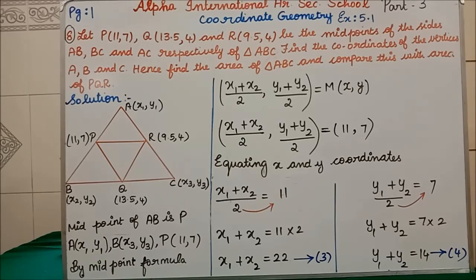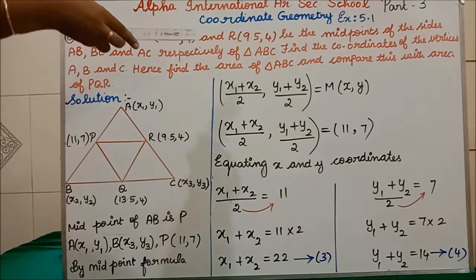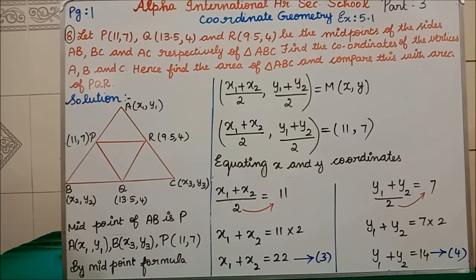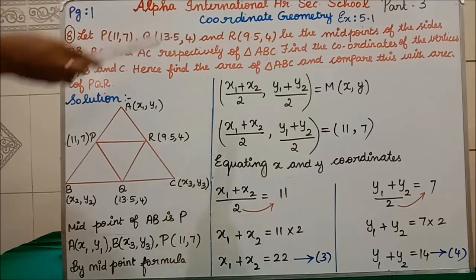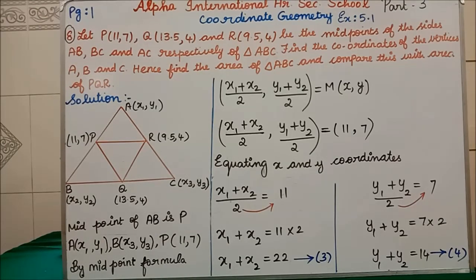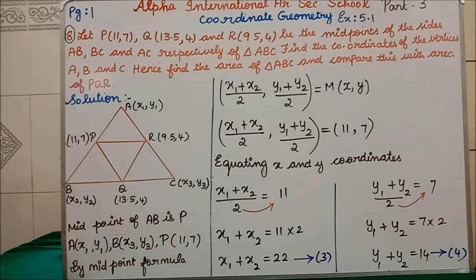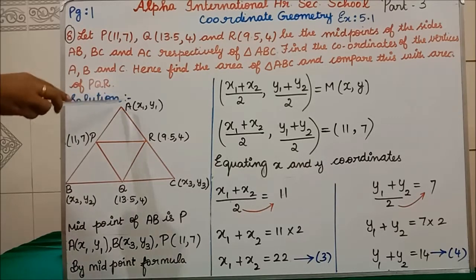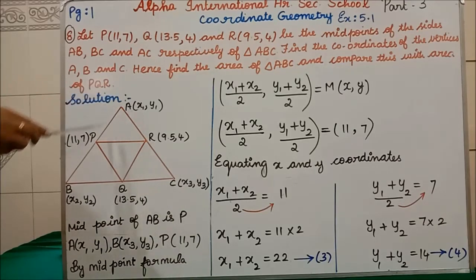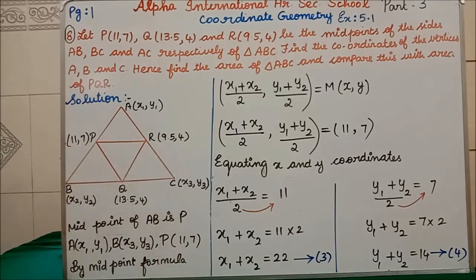See the 8th question. Let P(11,7), Q(13.5,4) and R(9.5,4) be the midpoints of the sides AB, BC and AC respectively of triangle ABC. In the side AB we are having the midpoint P. In the side BC we are having the midpoint Q. Similarly in the side AC we are having the midpoint R. Draw one triangle and keep midpoints on AB, BC and CA sides, marking vertices P, Q, R.